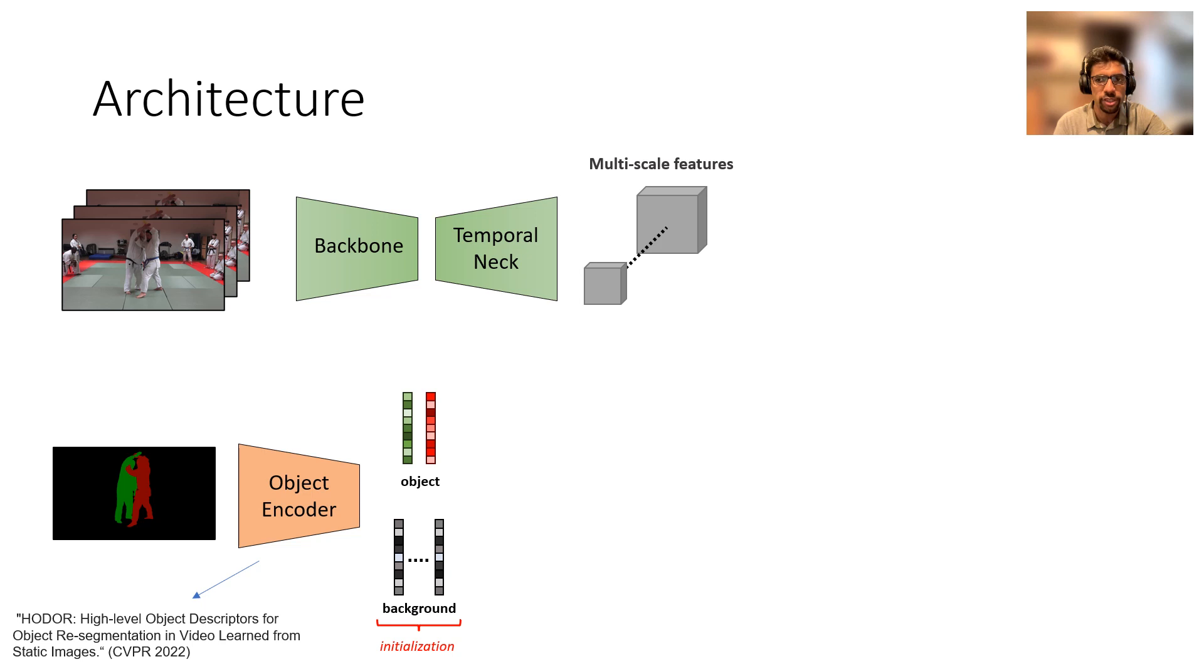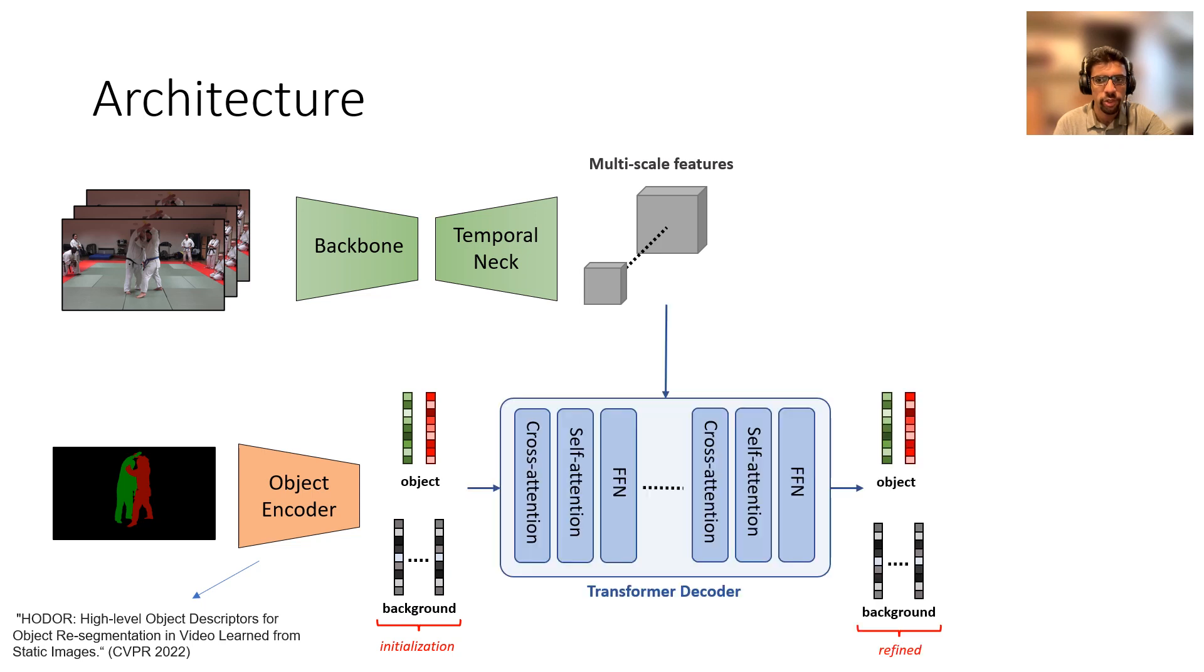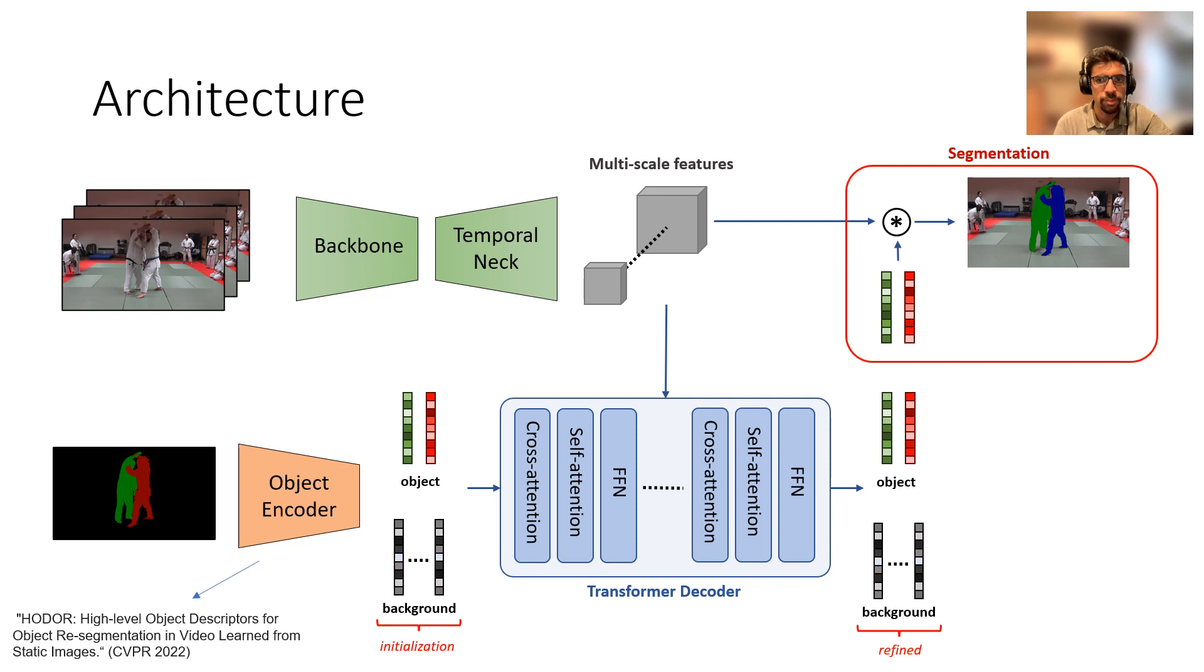In a similar fashion, we also initialize multiple queries to represent all background points which are not part of any object. The resulting set of object and background queries are then refined by the transformer decoder and at the end, we compute object masks by simply taking the dot product between the video features and the object queries.